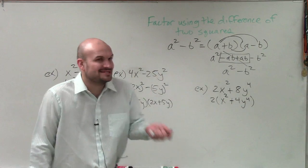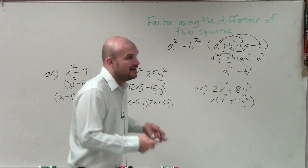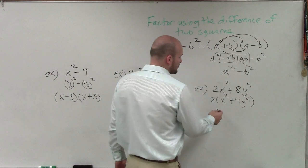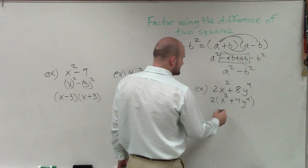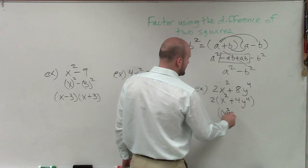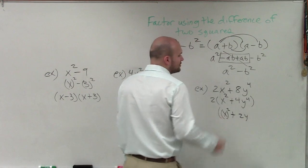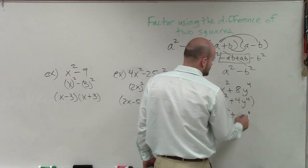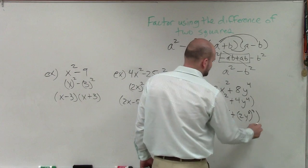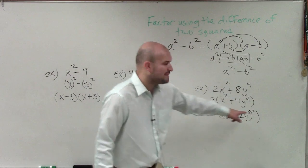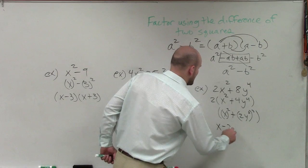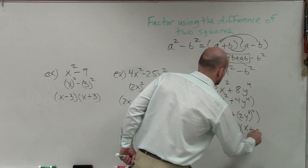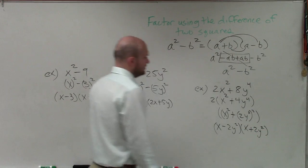And you still might say, well, how are you going to write y to the 4th? That's not a squared term. You're right, but I can rewrite it as a squared term. So factor out the 2, but let's write this as squared terms. So I have x squared, and how am I going to rewrite 4y to the 4th as a squared term? I can now write that as 2y squared squared. So therefore, my difference of two squares now are going to be x minus 2y squared times x plus 2y squared.